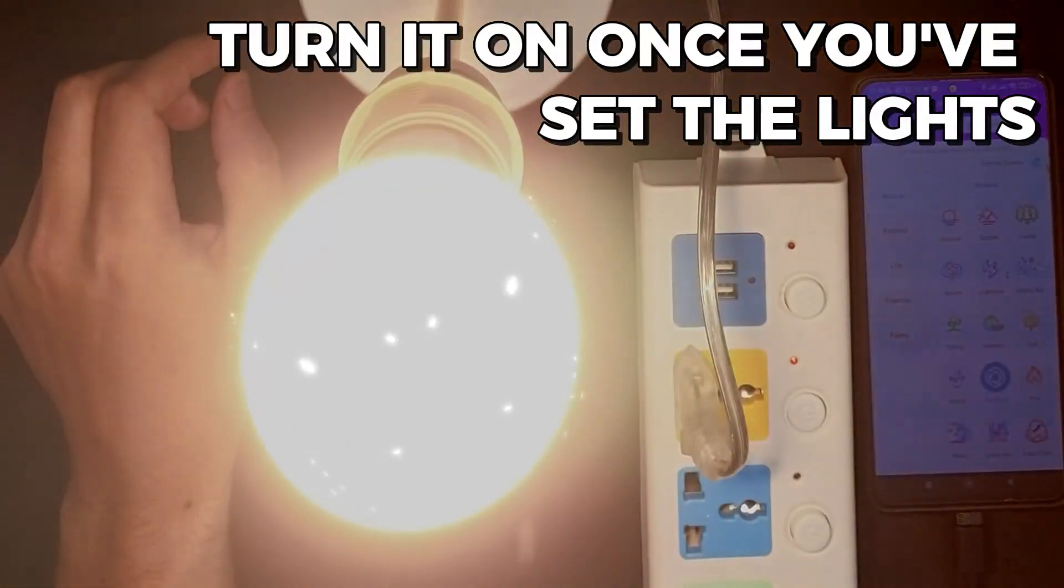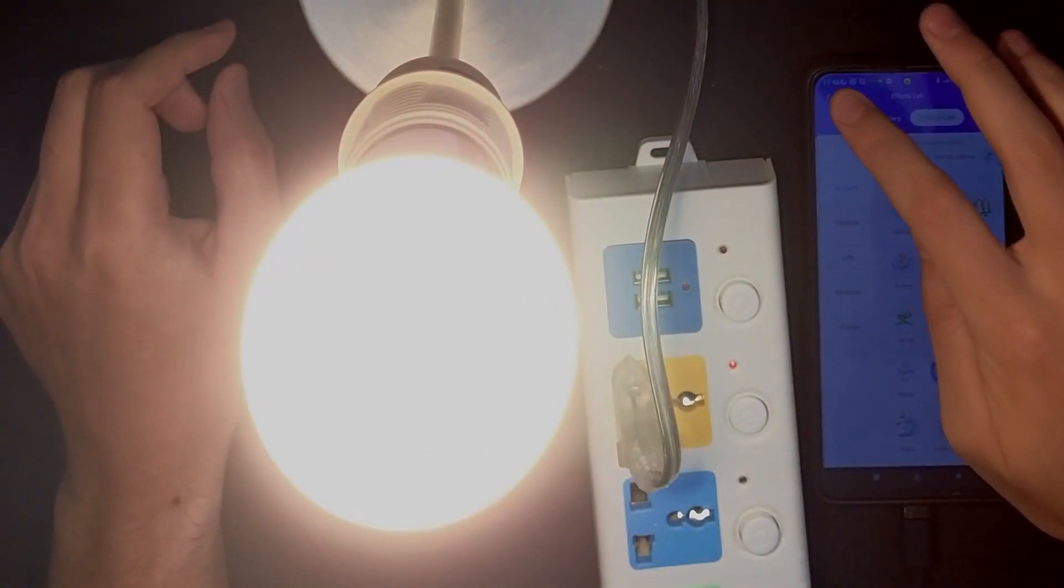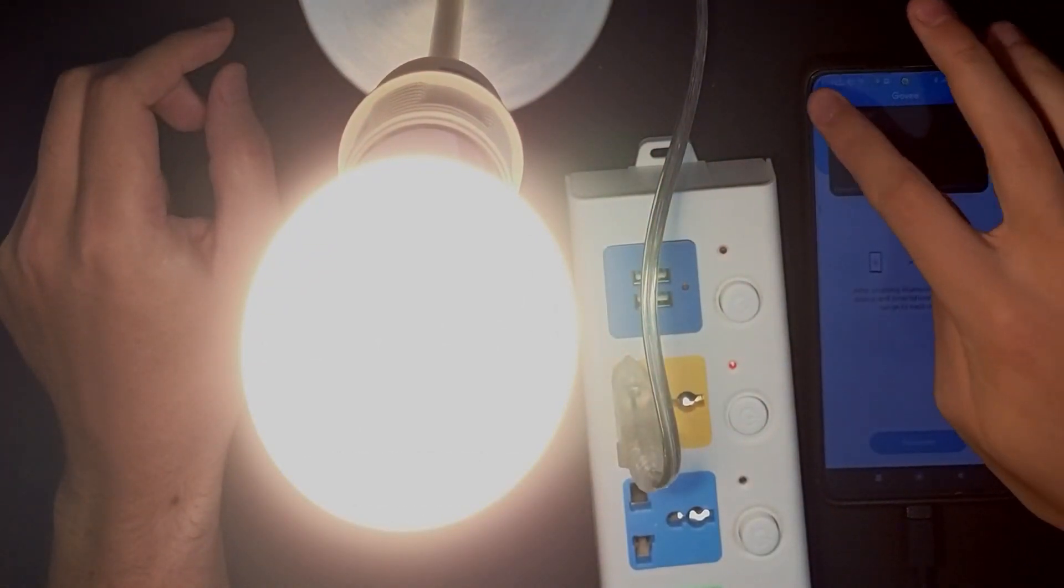Turn it on once you've set up the lights. Download the Govee Home app to your smartphone to customize the lighting to suit your preferences and create lighting schemes for different moods.